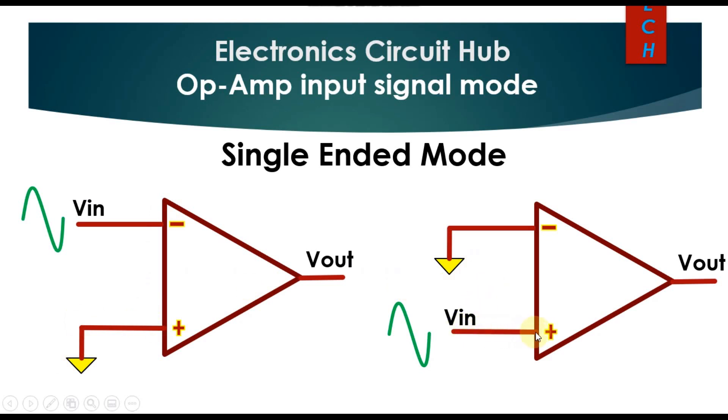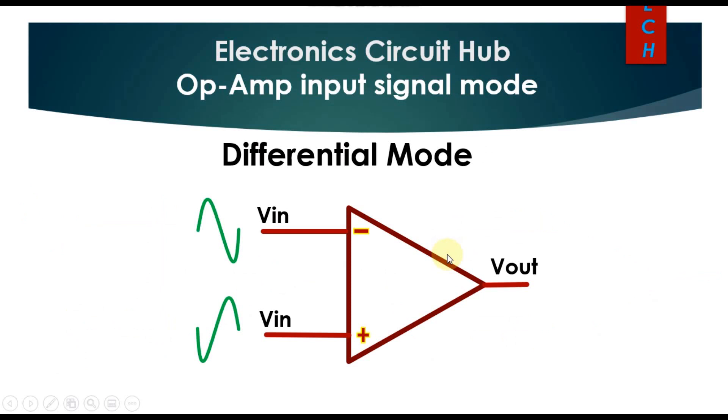In the differential mode, the input signal is applied at both input terminals of an operational amplifier. You can see here, VIN is applied here also and VIN is applied here also, but both input signals are 180 degrees out of phase.